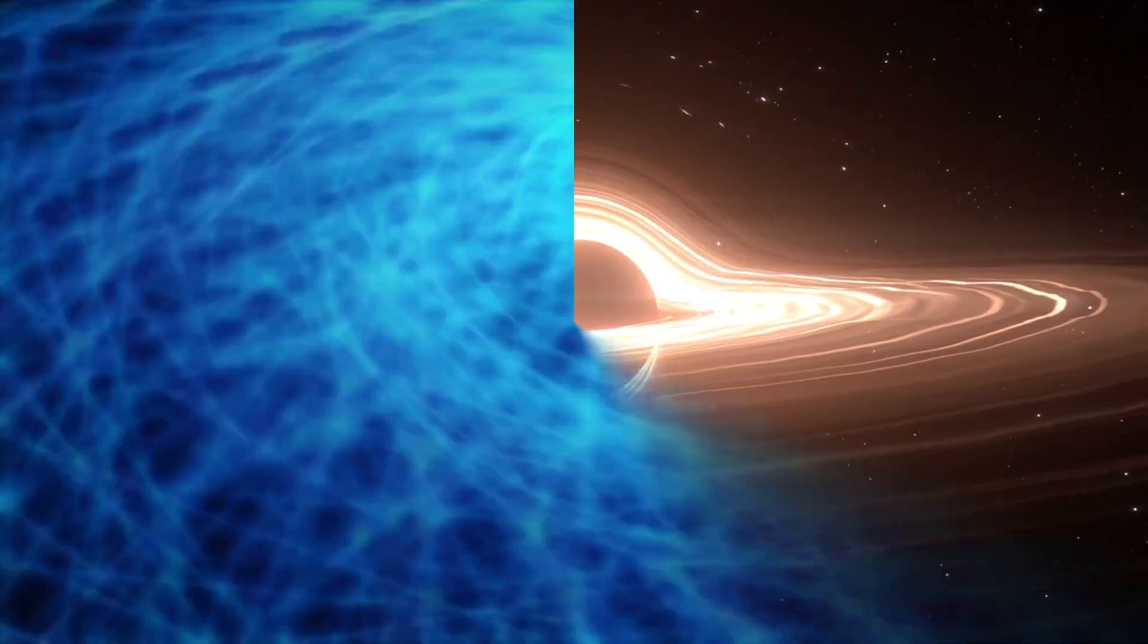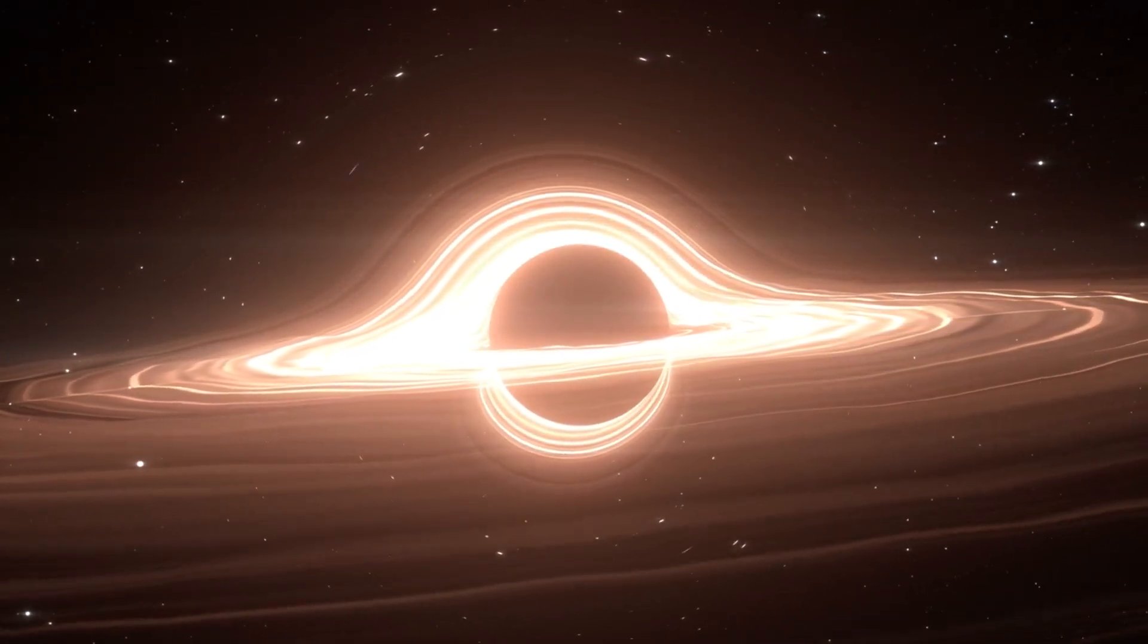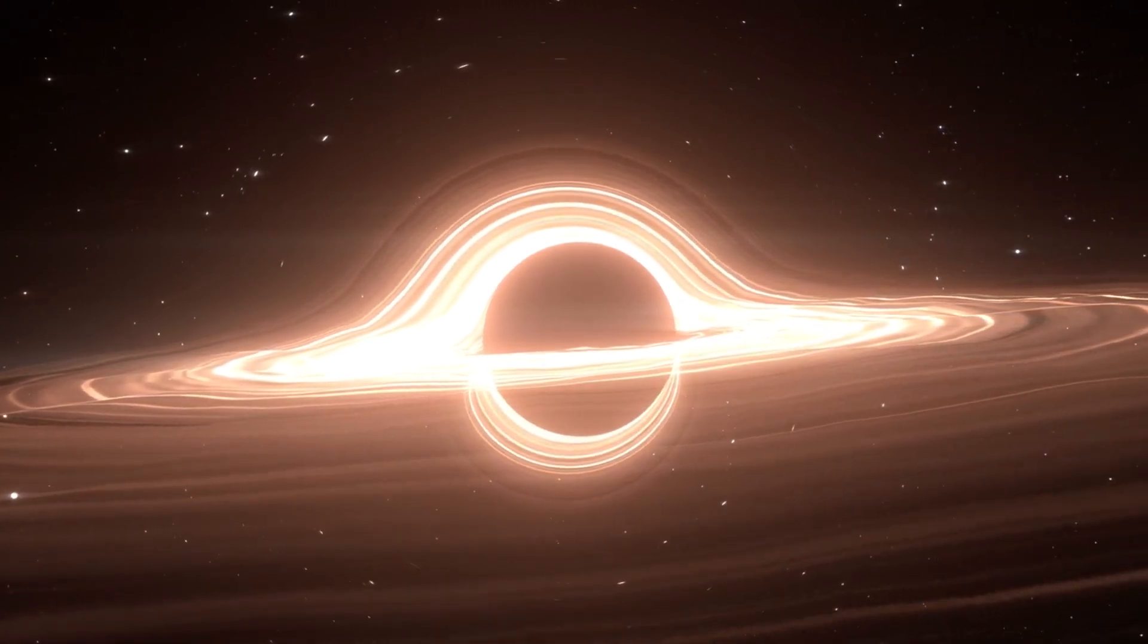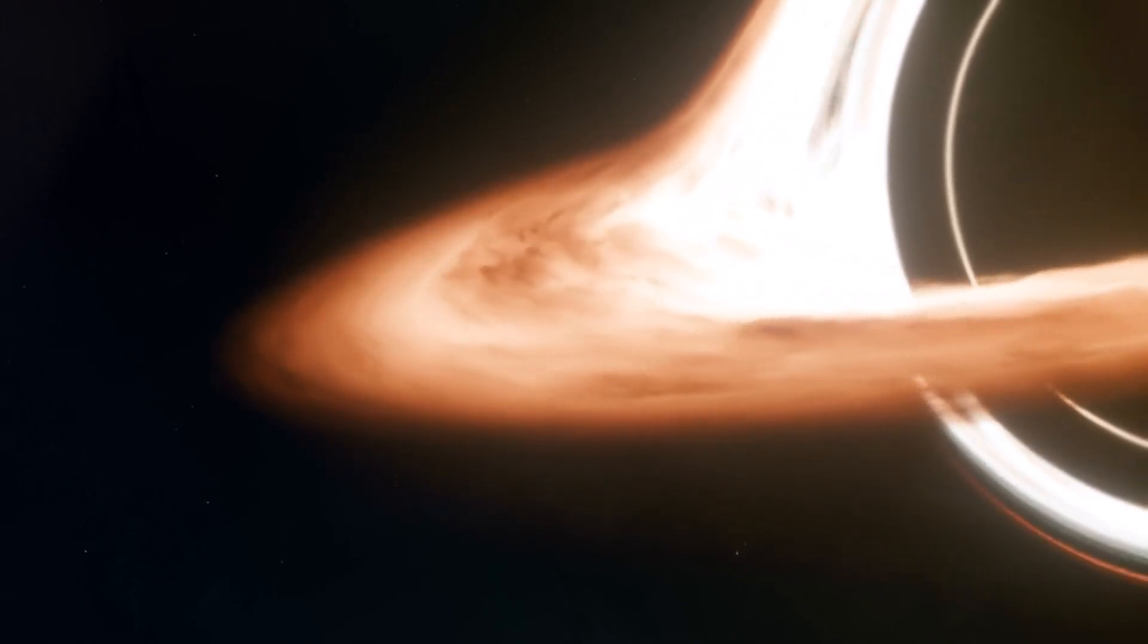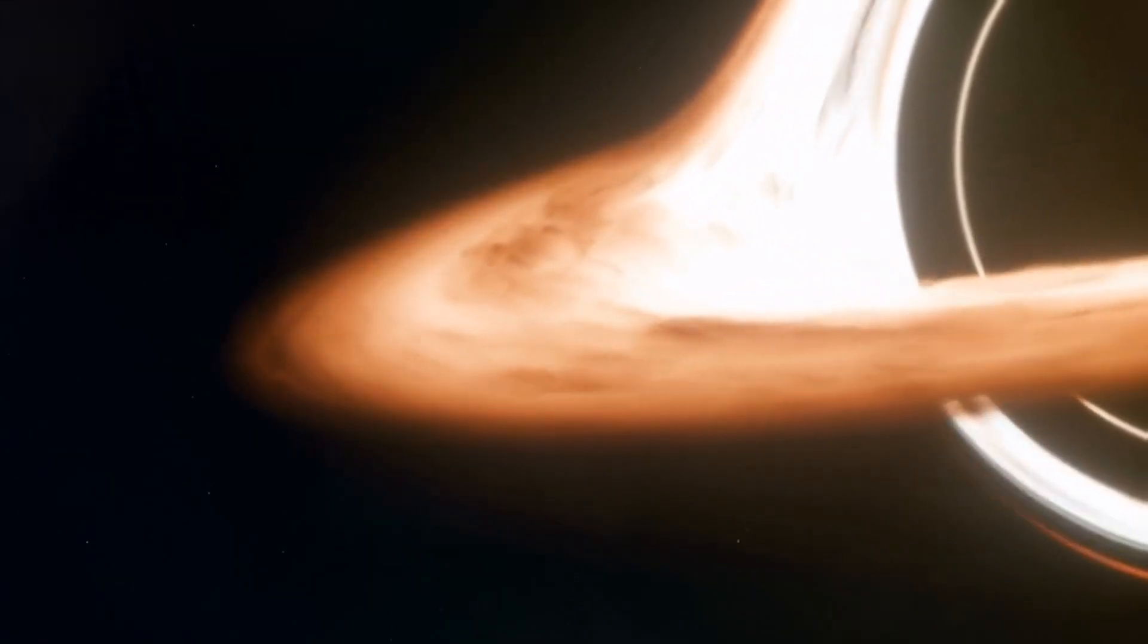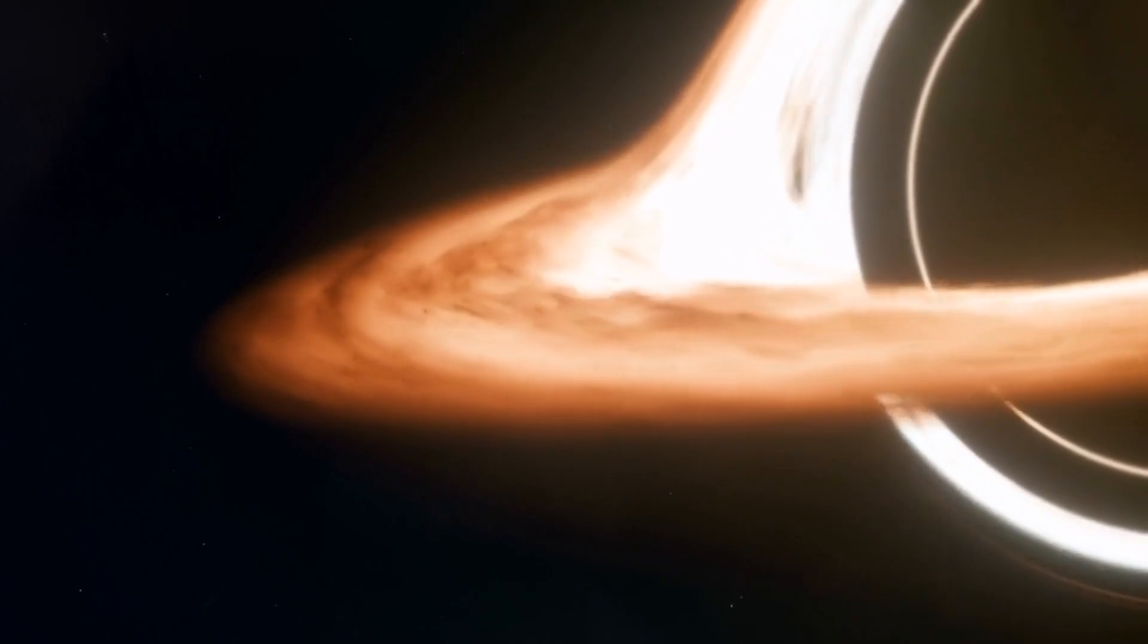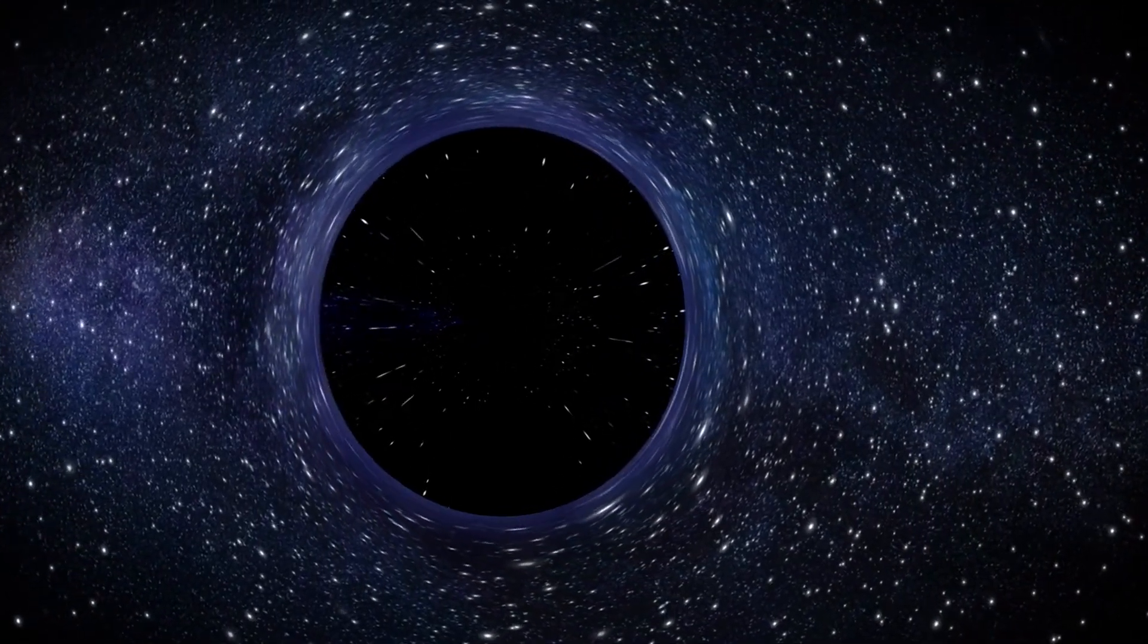A black hole's formation results from the core's gravitational collapse being so powerful that it forms a singularity, a point of infinite density. Surrounding this singularity is the event horizon, a boundary beyond which nothing can return. The event horizon is not a physical surface but rather a point of no return. Once an object crosses the event horizon, it inexorably moves toward the singularity.